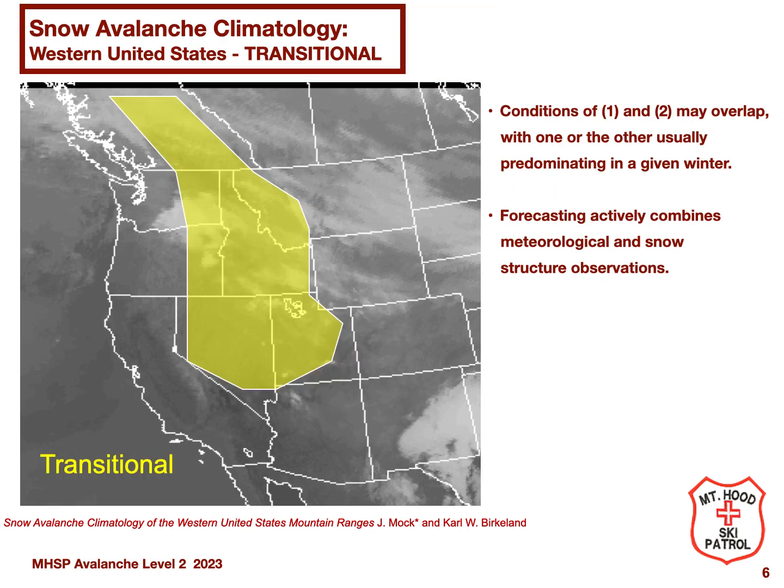The transitional region includes eastern Oregon and Washington, Idaho, Nevada, and parts of Utah. This region is influenced by both the warm, moist air from the Pacific and the cold air mass from Alaska. The characteristics of the snowpack are a mix of those found in the other two regions. Forecasting uses both meteorological analysis and snowpack structure analysis.